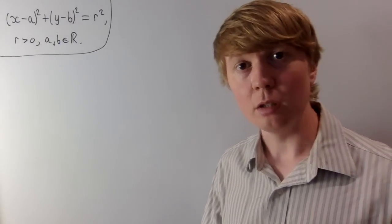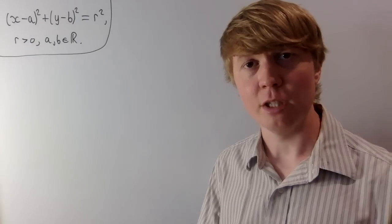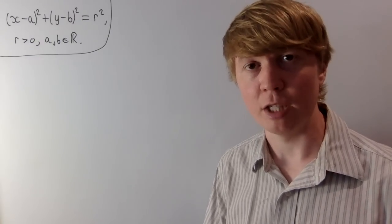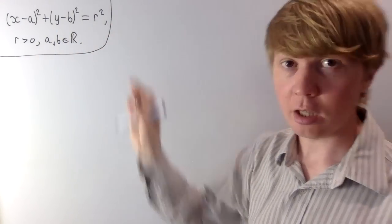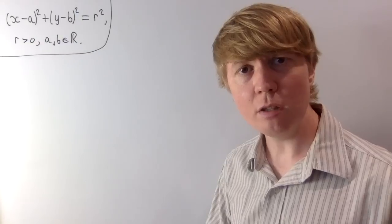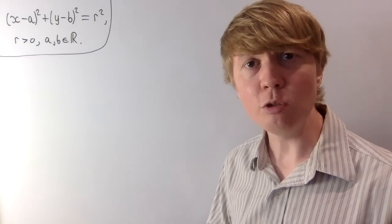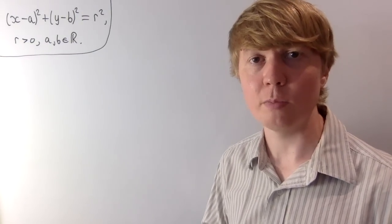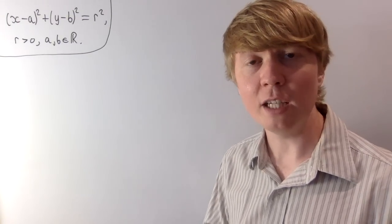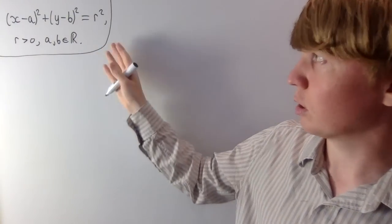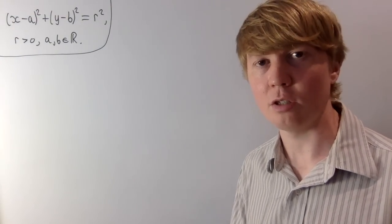This is the general equation of a circle in 2D space, and what we're going to do is look at a nice way of capturing this general form of a circle using differential equations. We'll start with the equation of a circle with a, b, and r as constants, then turn it into a differential equation with no constants, where the solutions correspond exactly to the set of circles in R2. This is a really nice way of capturing the set of all circles, and it's going to look very different from the general form we're used to.